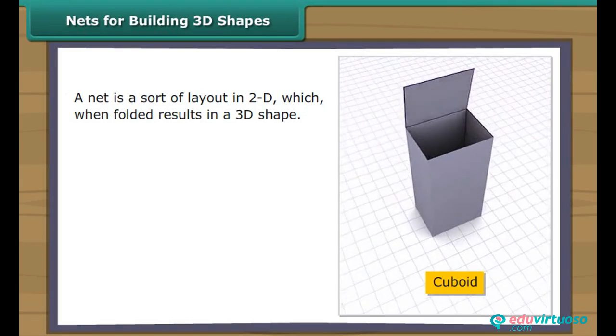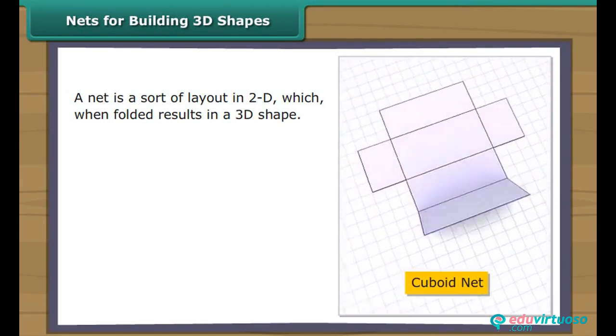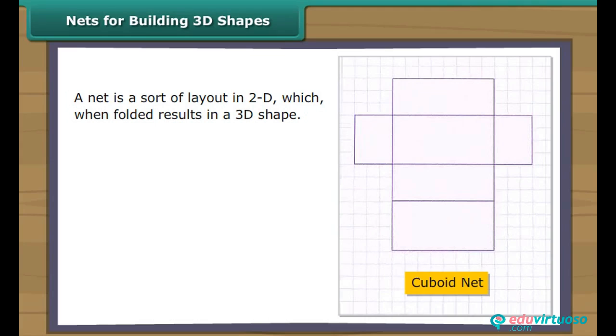Nets for building 3D shapes. Now we see how a cube is formed. A net is a sort of layout in 2D, which, when folded, results in a 3D shape.